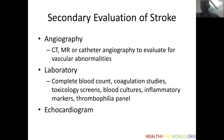Laboratory studies are often useful as adjuncts, so we would collect a complete blood count, coagulation studies to look for a hypercoagulable state, toxicology screens, blood cultures, and inflammatory markers because of the high prevalence of infection in children with arterial ischemic stroke. Sometimes it's useful to run a thrombophilia panel, especially when no other definite cause can be identified. An echocardiogram is also indicated to look for cardioembolic causes such as an intracardiac shunt or a lesion within the heart that predisposes to thrombosis.